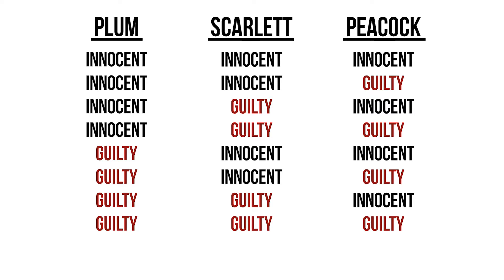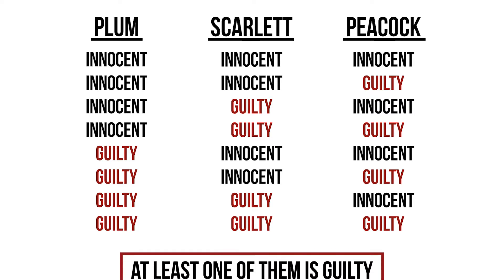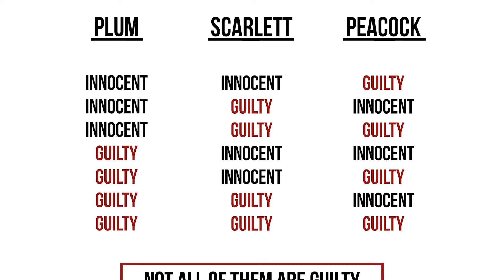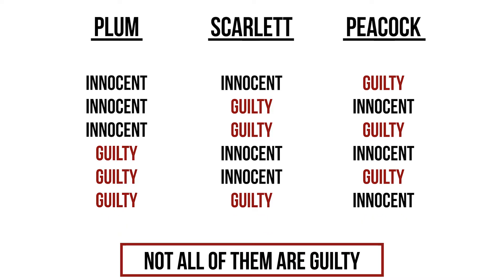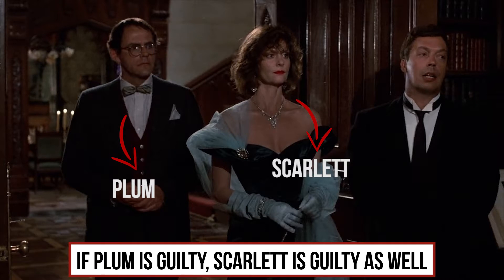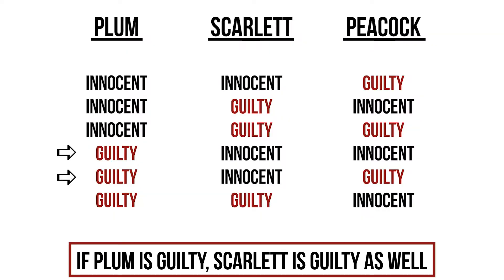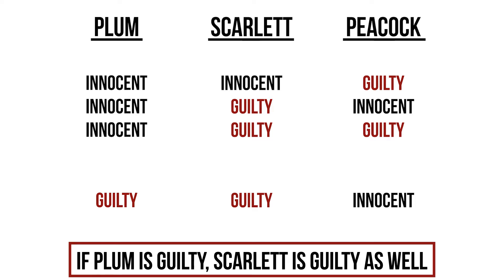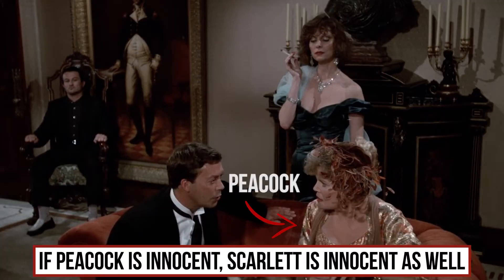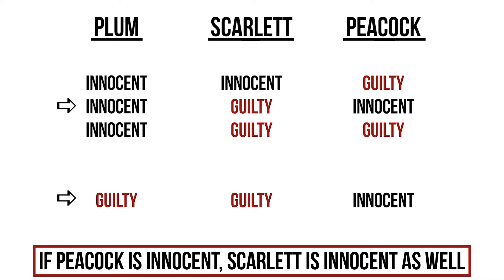Again, because we have three suspects, this gives us eight possible situations. The first thing we know is that at least one of them is guilty. We also know that not all of them are guilty. We also know that if Plum is guilty, Scarlet is guilty as well, so we eliminate all situations in which Plum is guilty but Scarlet is innocent. Lastly, we know that if Peacock is innocent then Scarlet is innocent as well, so we eliminate all situations in which Peacock is innocent but Scarlet is guilty.